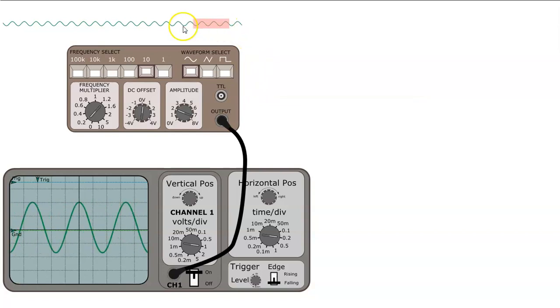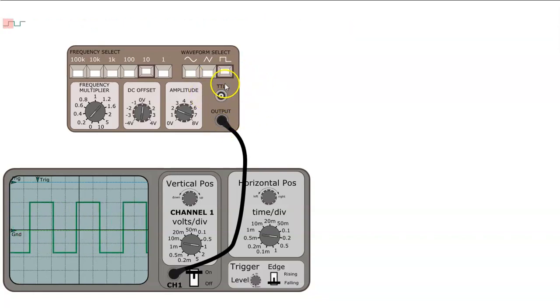So what we have here at the very top is the waveform that's being produced by the signal generator at its output and we can change the shape of the waveform that's being produced by changing these buttons.